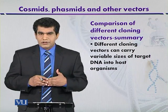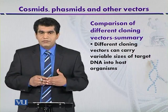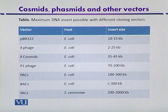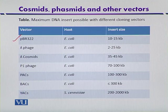So we can do different types of cloning using different types of vectors, like shuttle vectors and expression vectors. Now we can compare them in the form of a table — specifically, what is the maximum DNA insert that can be cloned by using different types of cloning vectors.